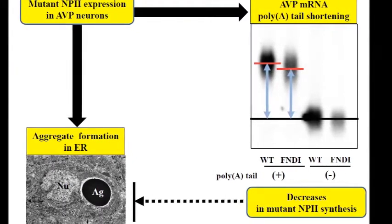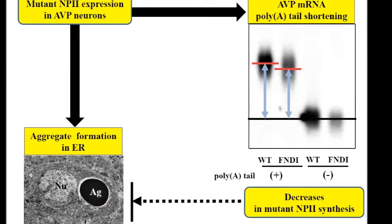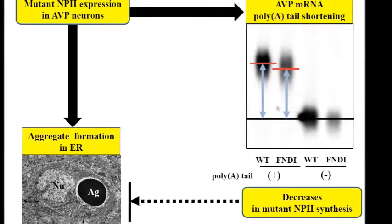Arima and colleagues suggest that the mechanism underlying decreased vasopressin production in their FNDI mice is akin to processes involved in endoplasmic reticulum stress.